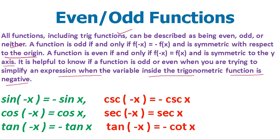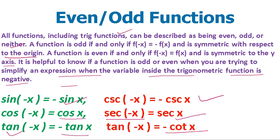sin(−x) is always equal to −sin(x). cosec(−x) is always equal to −cosec(x). cos(−x) always gives cos(x). sec(−x) always gives sec(x). tan(−x) always gives −tan(x). cot(−x) is always equal to −cot(x).